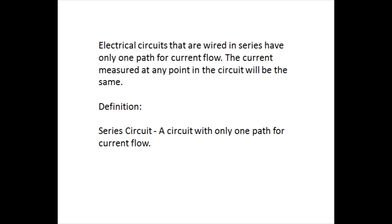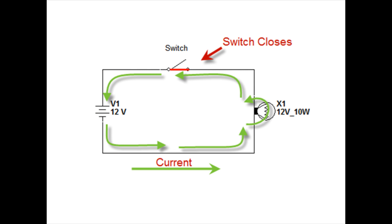The definition of a series circuit is a circuit with only one path for current flow. And here's an example I've included for a series circuit. When the switch closes, the electrons leave the negative pole of the battery, flow through the light bulb, and back to the positive pole of the battery. The same current can be measured at any point in the circuit.